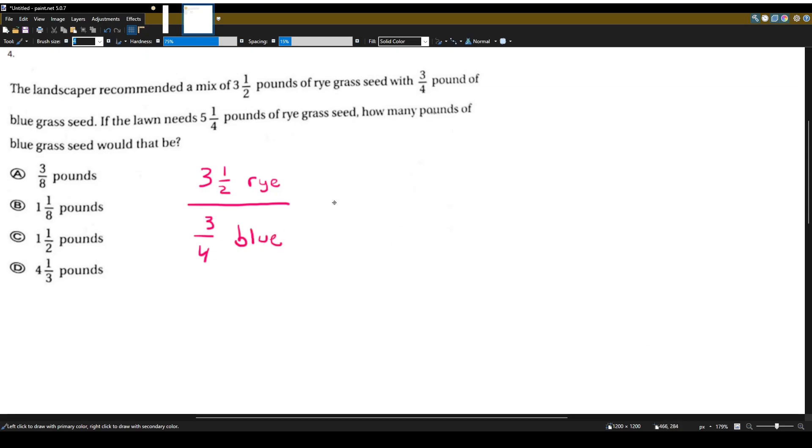So we want to make it a proportion. Let's set it equal to what we want. So what we want is how many pounds of bluegrass seed. Let's just call it x, x blue.